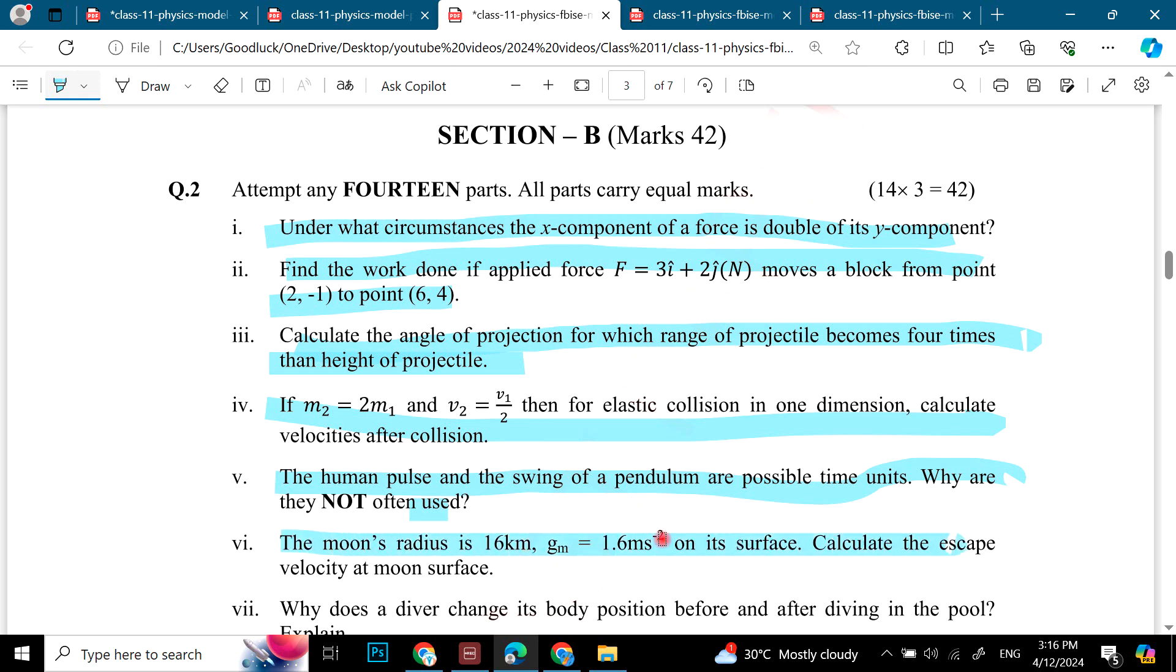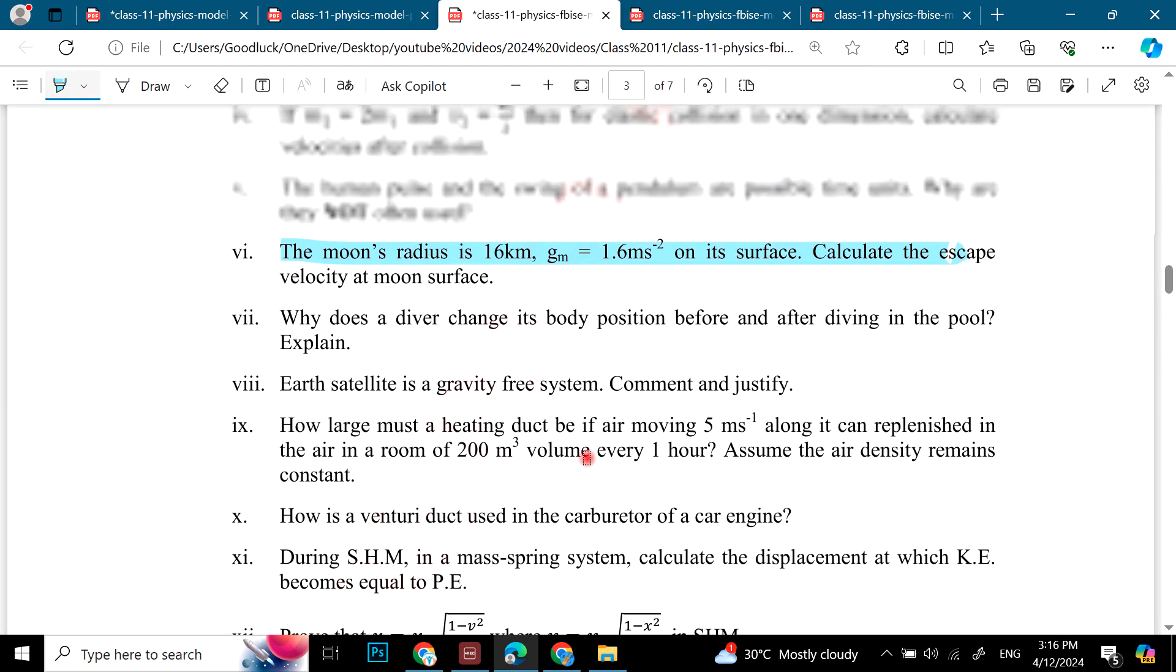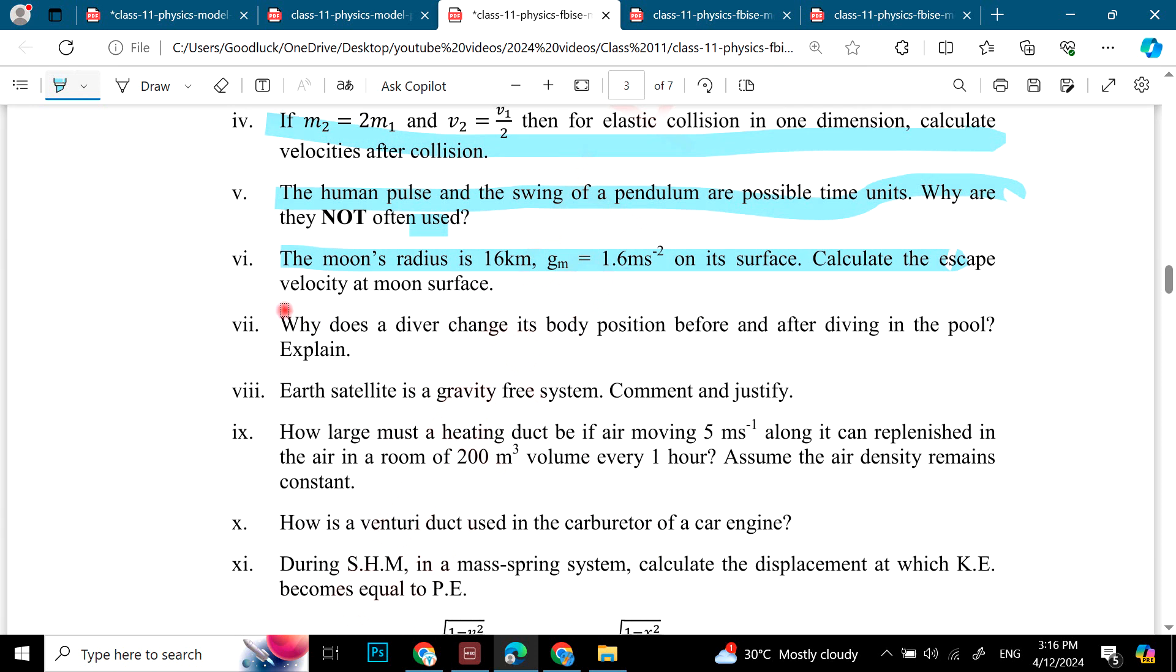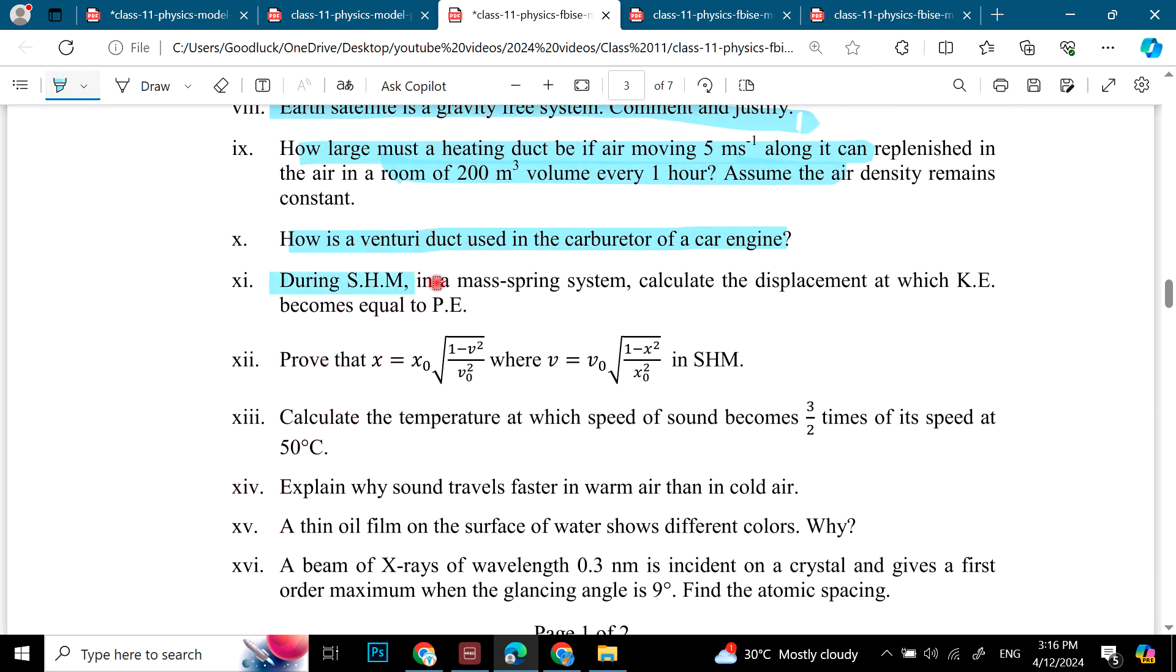The moon radius is 16 km. Gravity on moon is 1.6. Calculate the escape velocity. Chapter 4. Why does a diver change its position before and after diving in the pool? Earth satellite is a gravity free system, explain and justify. How large must be a heating duct be if air moving? This is repeated. How venturi duct used in the carburetor of a car engine? Again repeated. During simple harmonic motion.